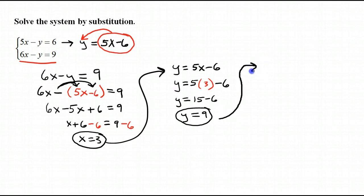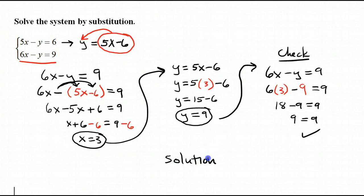One more thing we need to do is we need to check it. I won't require you to check it in both equations, but we're at least going to check it in the one that we did not use to find our second variable. I ran a check. I put 3, 9 into this second equation and it checked. So I can say that the solution is the point 3 comma 9.